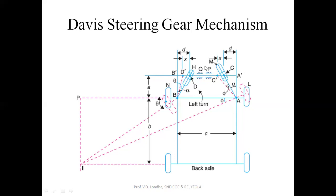The drawback of the Davis steering gear mechanism is that there will be maximum friction in the slotted link as well as in the bearing system. There will be maximum friction losses and maximum effort required while taking a turn left or right. So the Davis steering gear mechanism is now obsolete — friction is maximum and the effort required for turning the vehicle is also maximum. This type of steering gear mechanism is no longer used today.